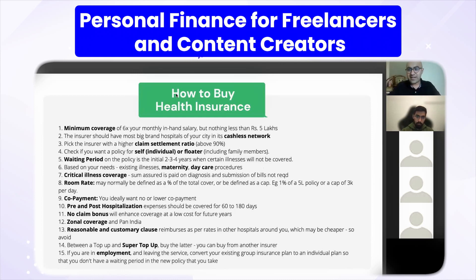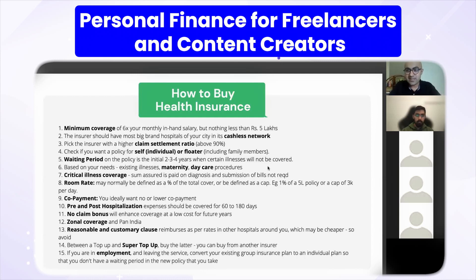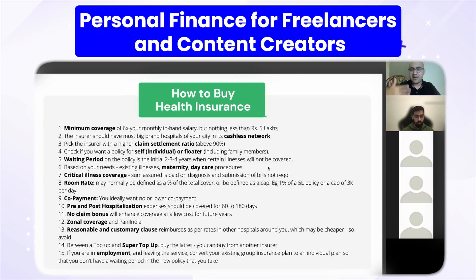Three or four year waiting period policies are much cheaper, so don't just go by price — look at this metric. Based on your needs, consider taking a policy which covers existing illnesses or daycare procedures. For example, if you need a root canal or certain surgeries where the hospital doesn't require an overnight stay, the insurance company will call it a daycare procedure and say it's not covered — ensure daycare procedures are covered.